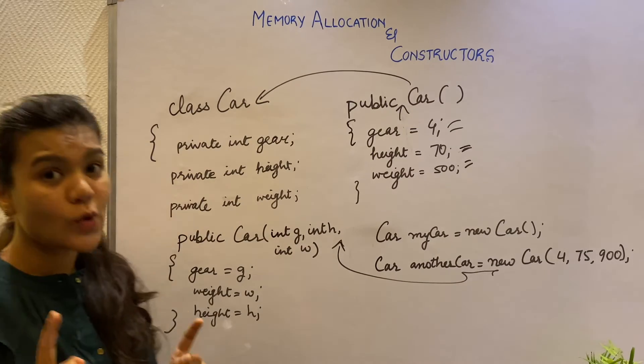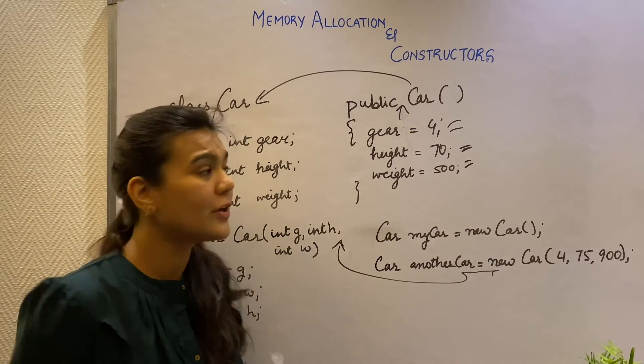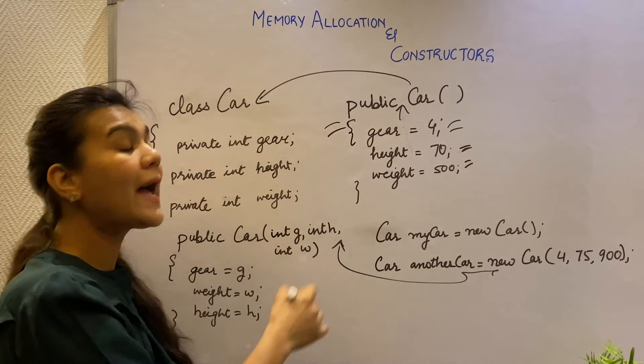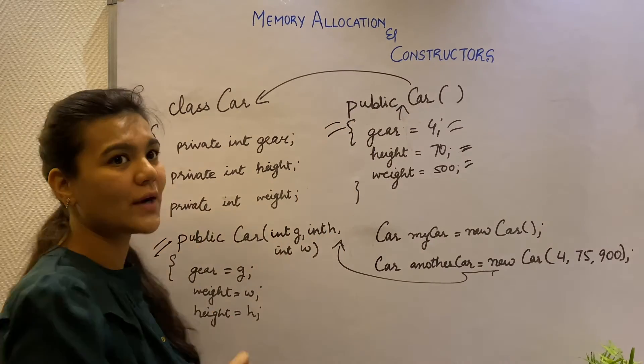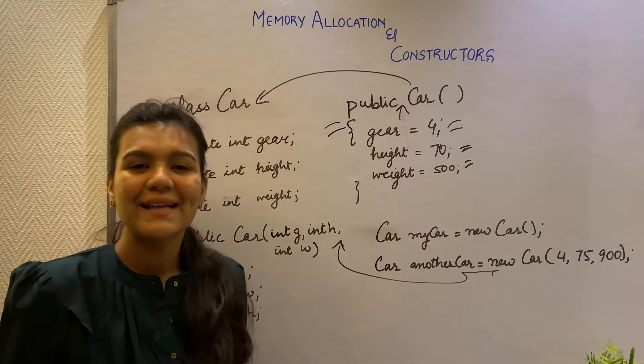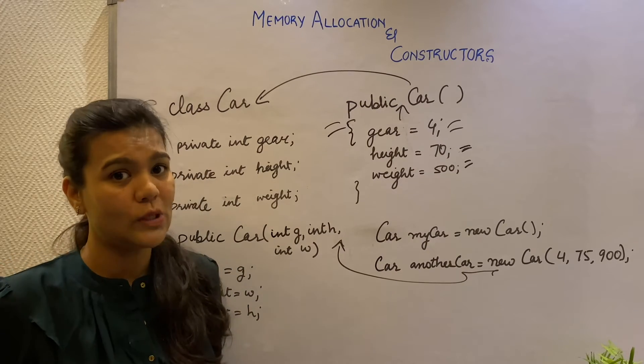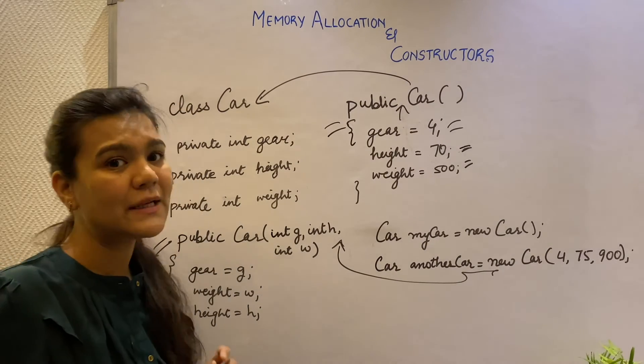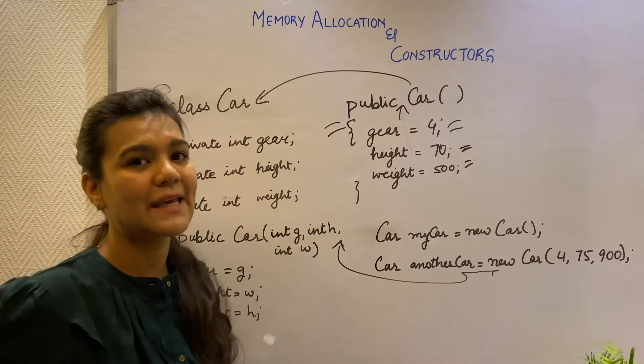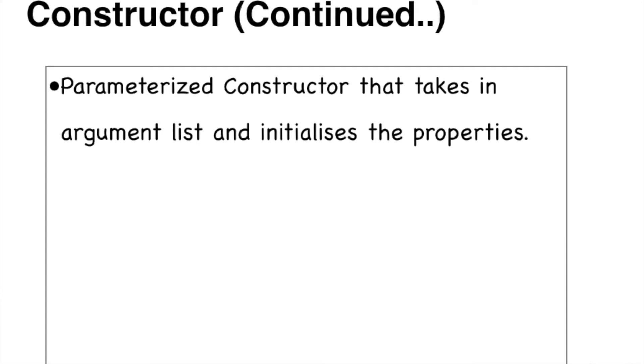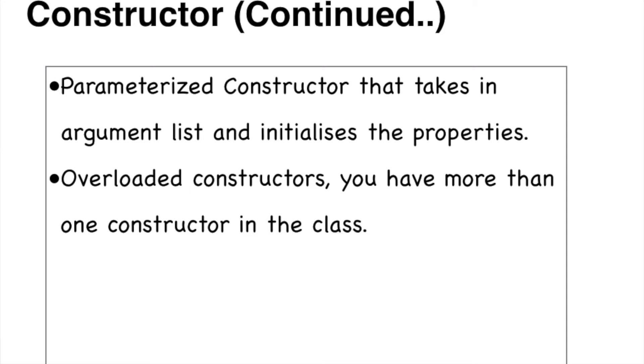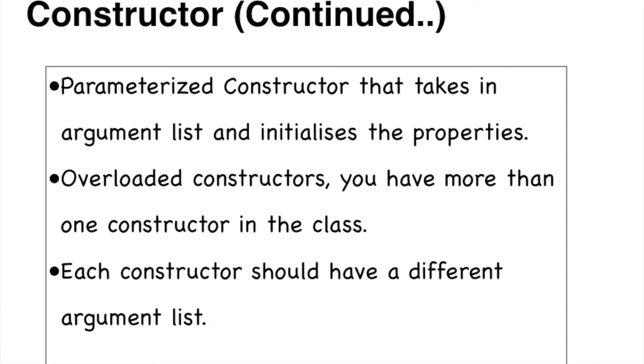Well, there's also one more thing. I can have both my default constructor and my parameterized constructor in the same class. This is called constructor overloading, which allows multiple constructors to be present in the same class. But similar to method overloading, the constructors have to have a different argument list. And each of them will be called based on what values are being passed during object creation.